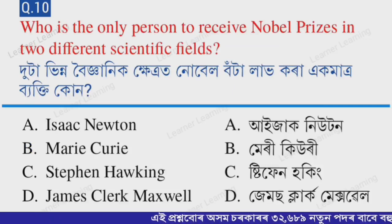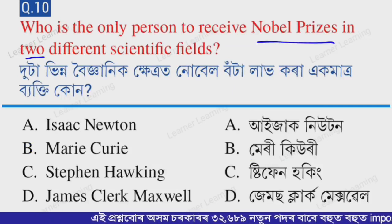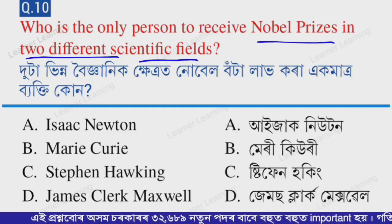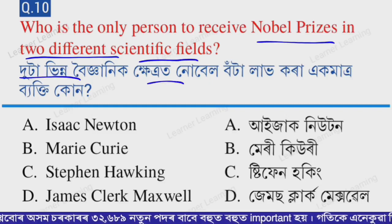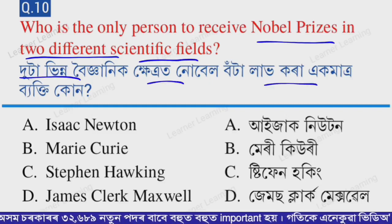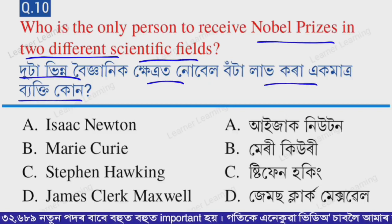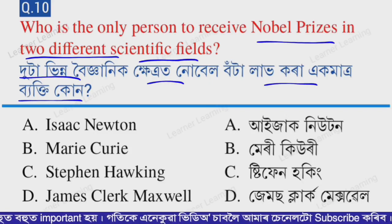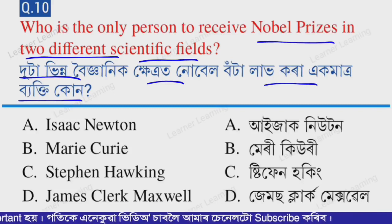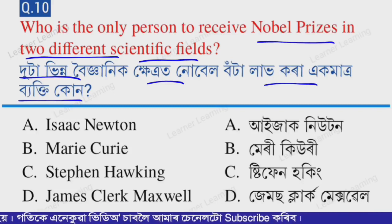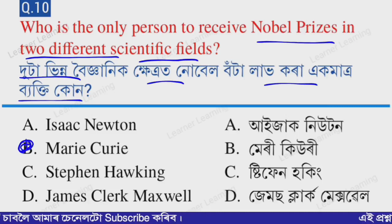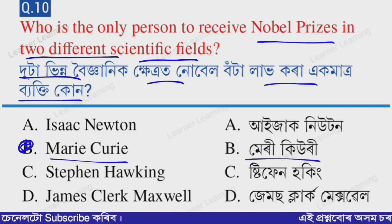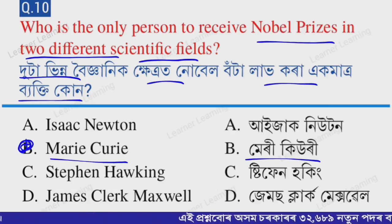Next question: Who is the only person to receive Nobel Prizes in two different scientific fields? Options: A — Isaac Newton, B — Marie Curie, C — Stephen Hawking, D — James Clark Maxwell. The correct option is option B — Marie Curie. Marie Curie is the only scientist to receive Nobel Prizes in two different scientific fields.